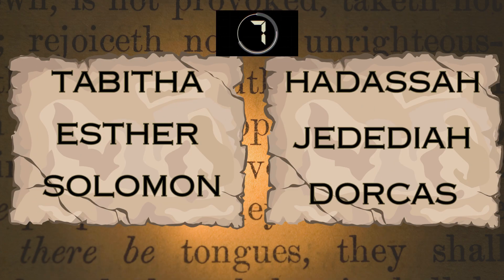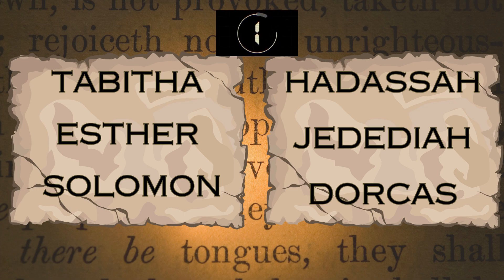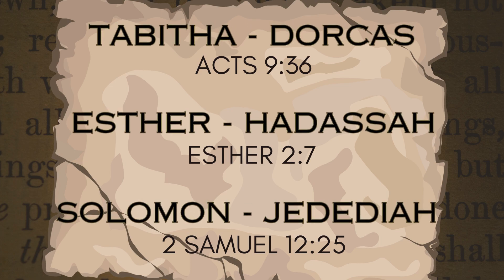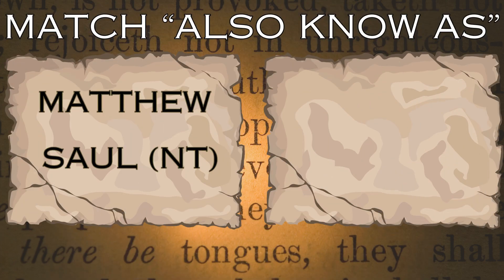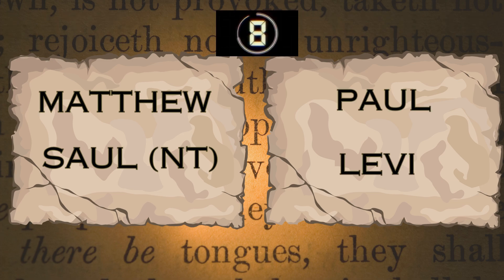Match the 'also known as' names for Tabitha, Esther, and Solomon. Tabitha was also called Dorcas. Esther was known as Hadassah. And King Solomon also went by two names — the latter being Jedidiah, named by God.